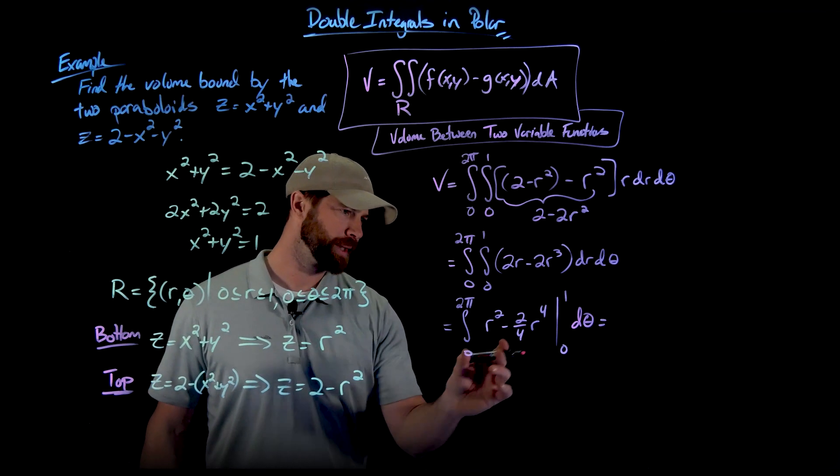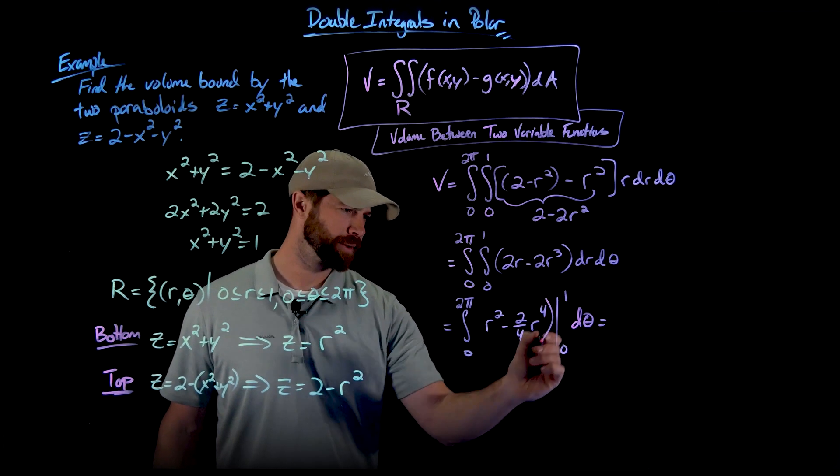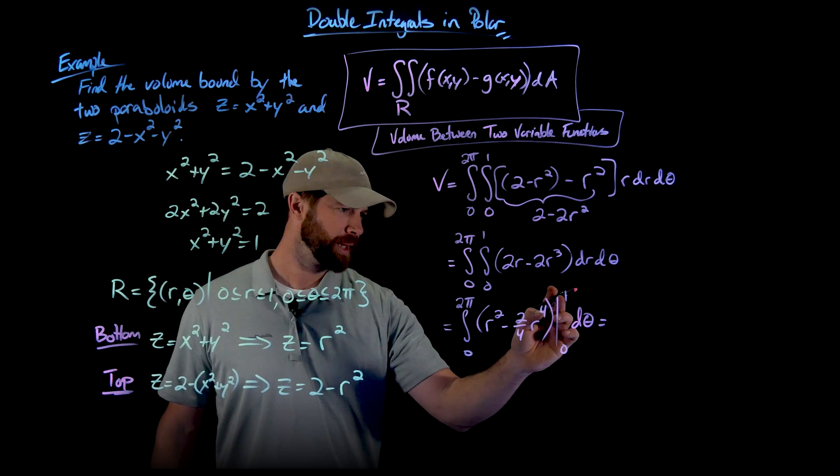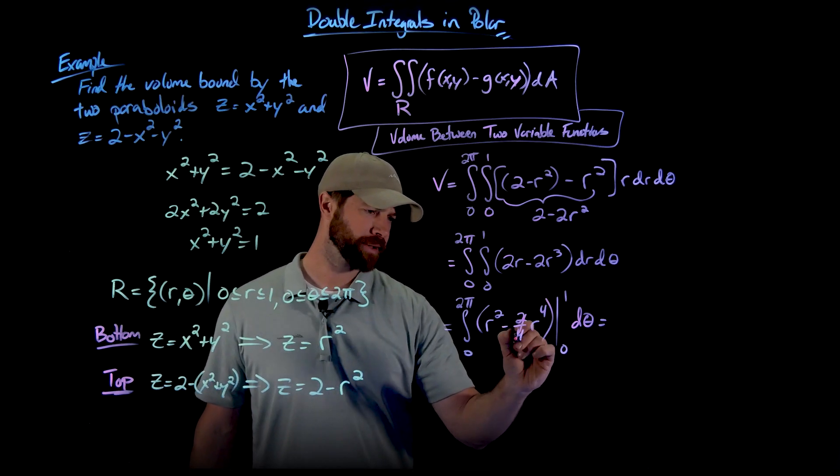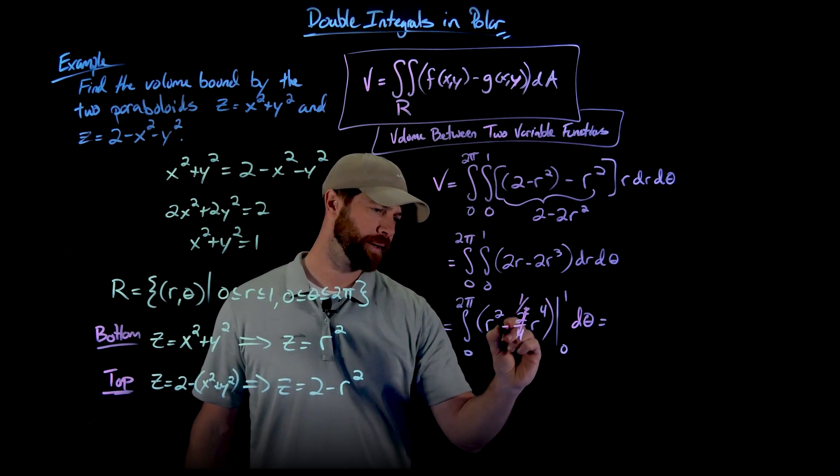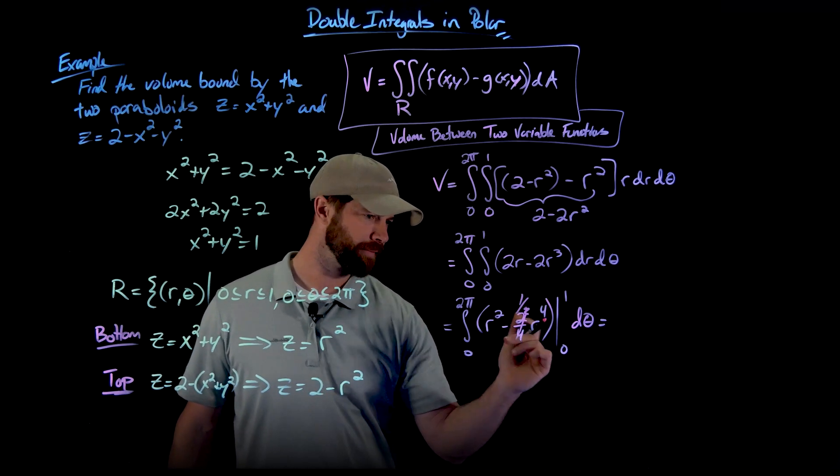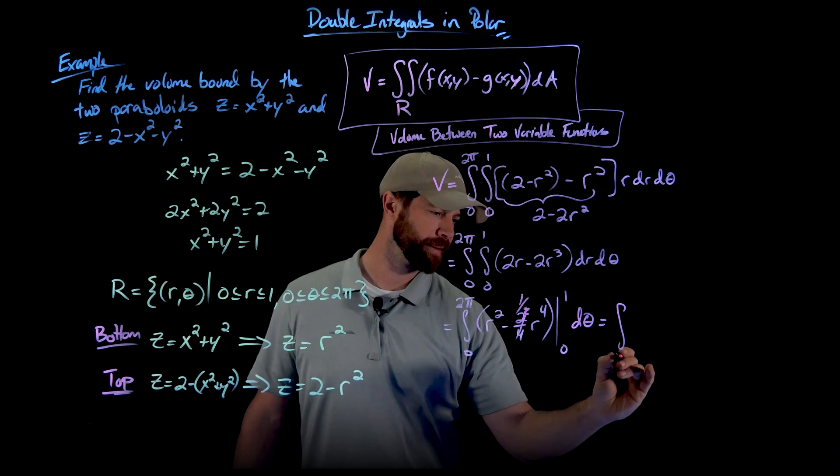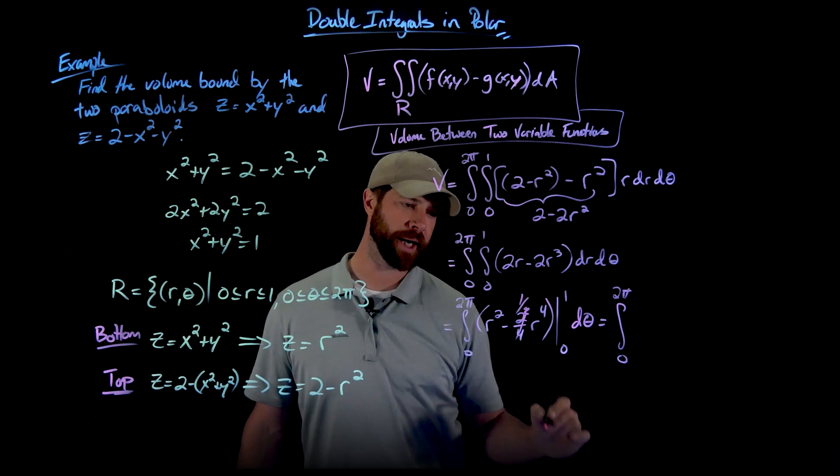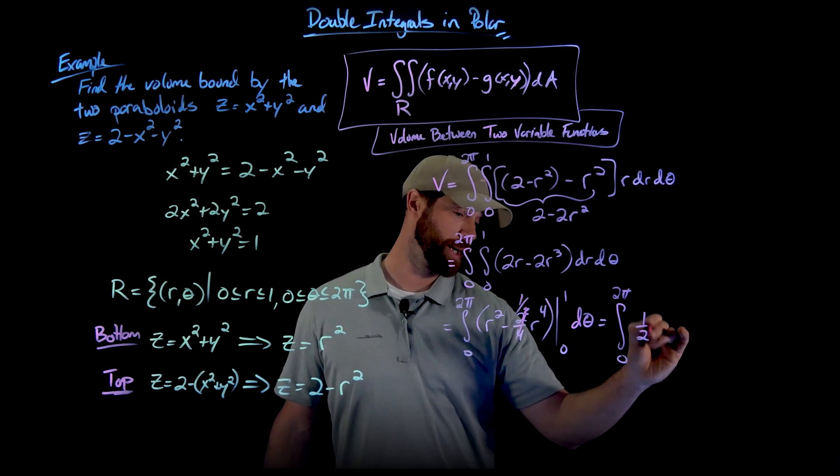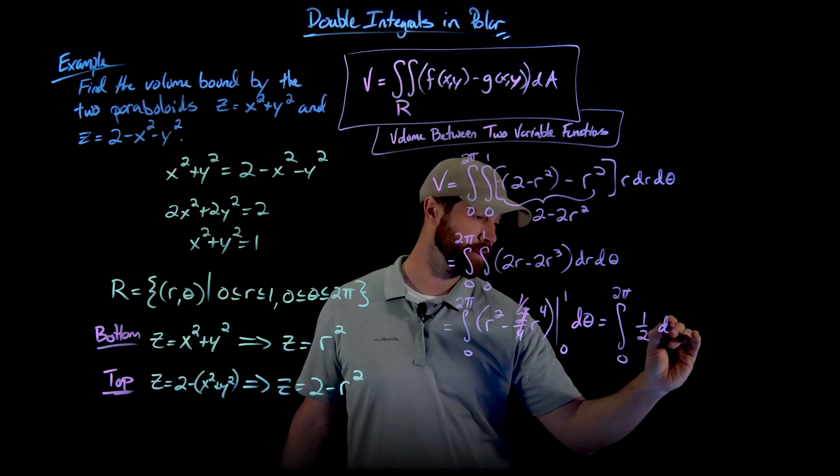And then when I do this, I'm just plugging in a 1 right here. So this is actually really easy. So I also want to write this to make sure we know that this is 1 half. So this is going to be r squared is 1, 1 minus 1 half. And so what we're going to get is from 0 to 2 pi of just 1 half. No theta at all. d theta.